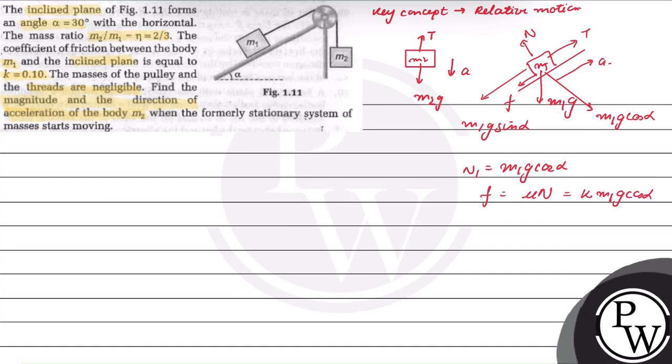Now, for M1 body, tension T minus M1G sin alpha minus friction is equal to M1 times acceleration. Now, we will put friction in this equation. So, T minus M1G times (sin alpha plus k cos alpha) is equal to M1A.